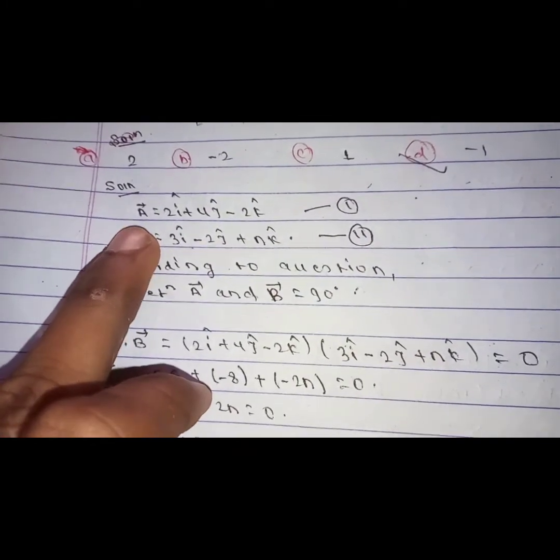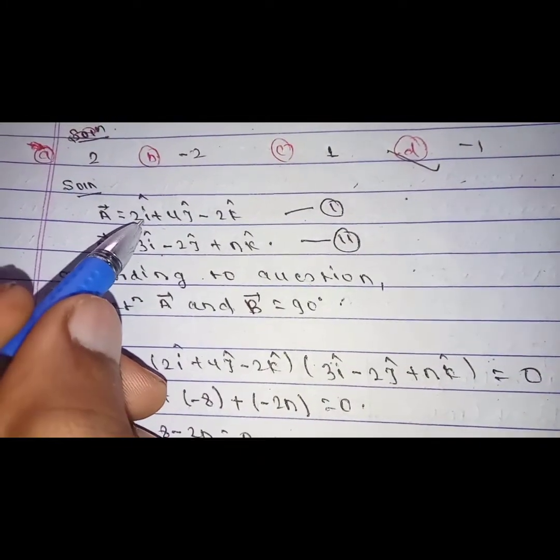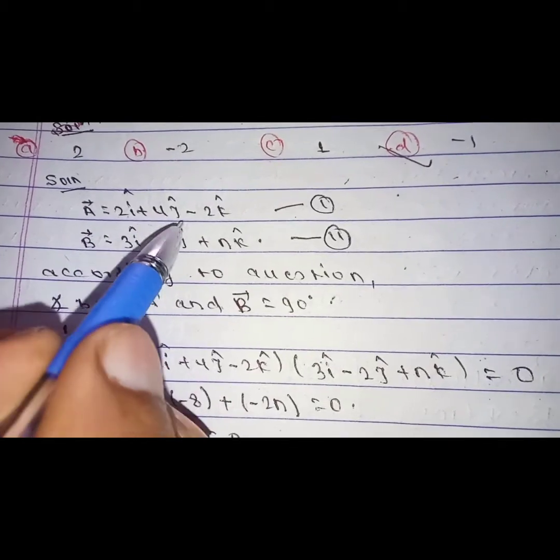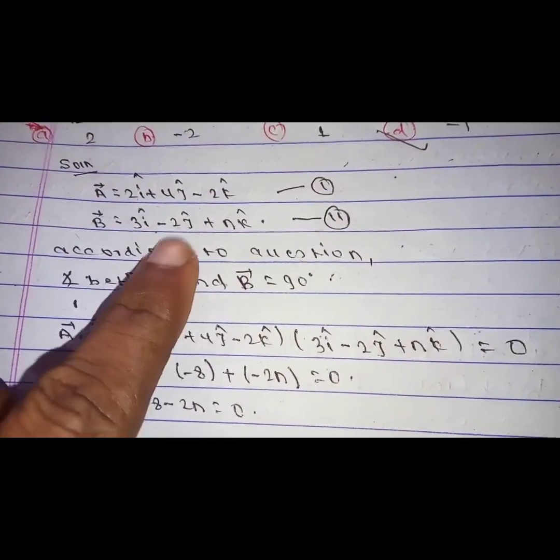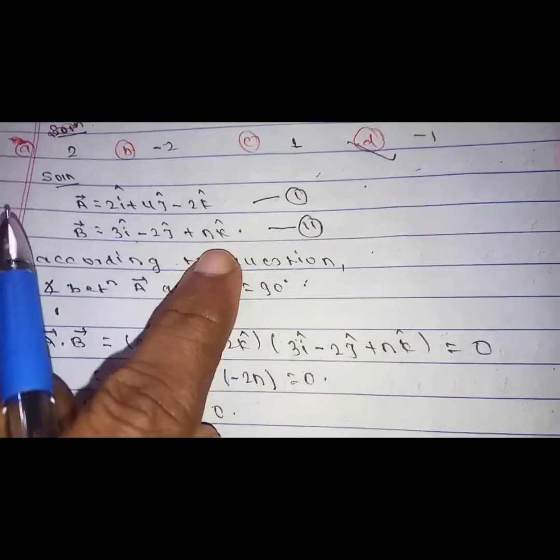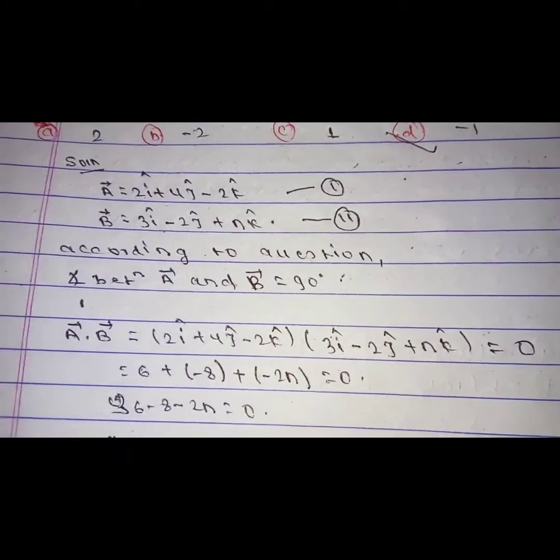First vector, my case, 2i unit vector plus 4j unit vector minus 2k unit vector. B equals 3i minus 2j plus nk unit vector.